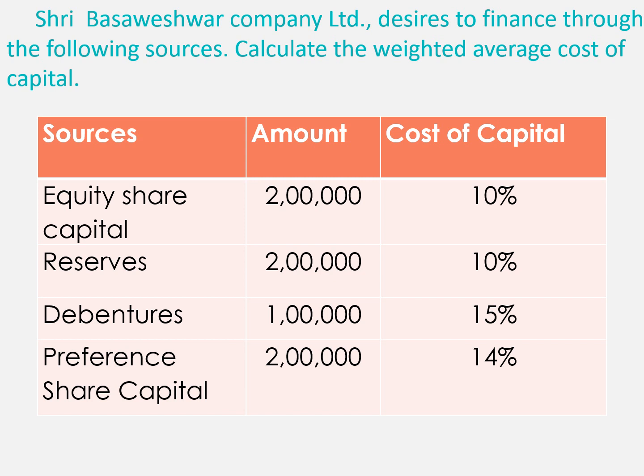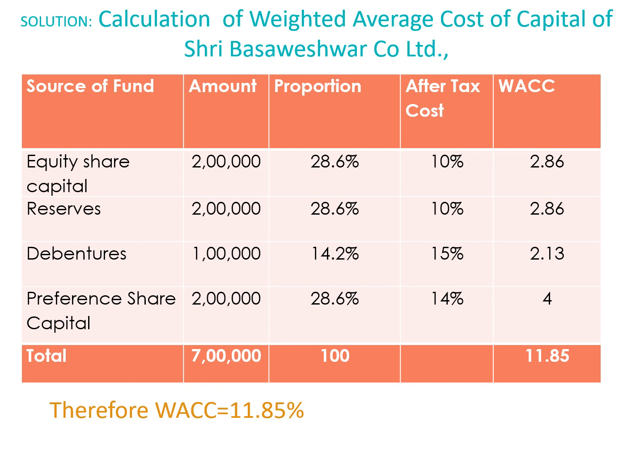In the problem, they have provided a specific cost of each component of the capital structure. You have to calculate the overall cost of capital which a company must bear by financing through these sources. There are two methods for calculating weighted average cost of capital: first by using proportion, and next by using a formula.